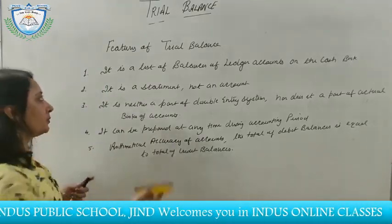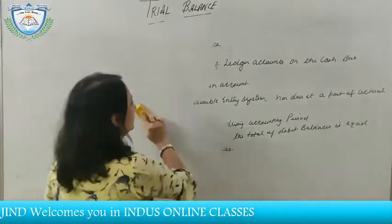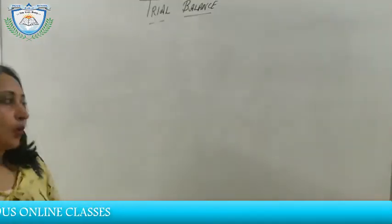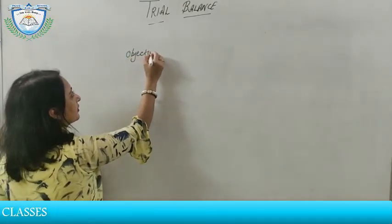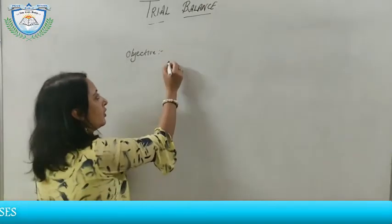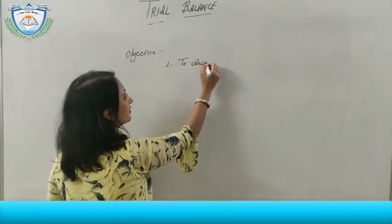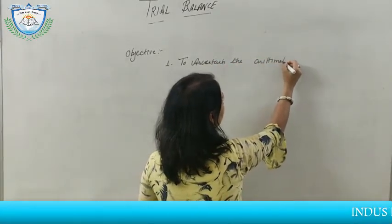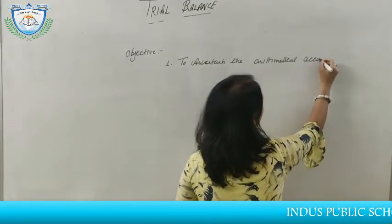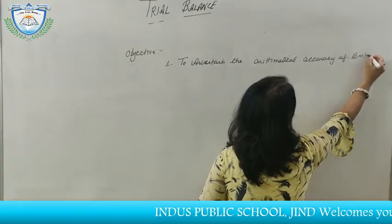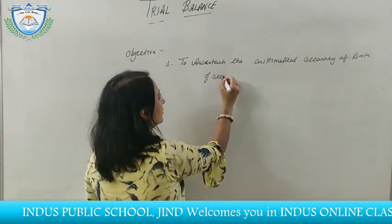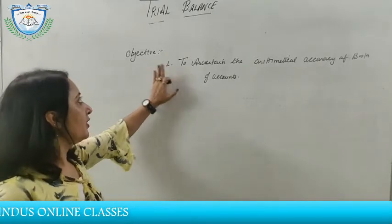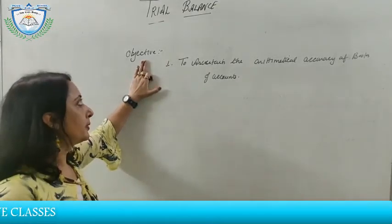Now, what are the objects — why do we prepare trial balance? The first object is to ascertain the mathematical accuracy of books of accounts. We check the accuracy of our books of accounts when we are preparing the trial balance.